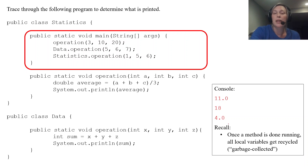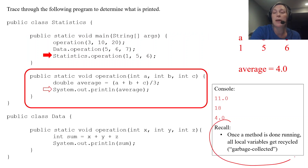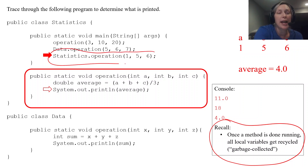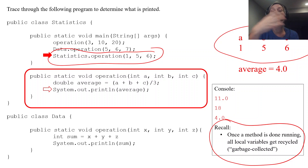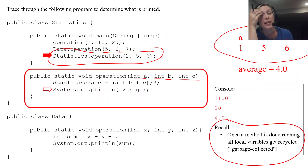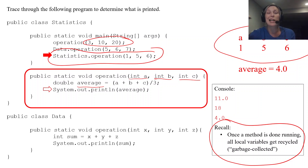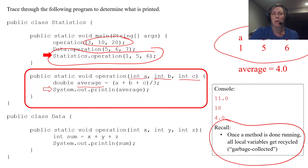Recall: once a method is done running, all local variables get recycled — what we call garbage collected. That's why when we ran the operation method again, a, b, and c got new values — they were created again. They were declared and assigned values in the parameter list and did not retain previous values. Same with average: it was declared and created fresh each time. After the method is done running, all local variables get tossed out and no longer exist.